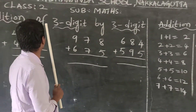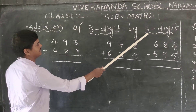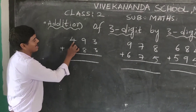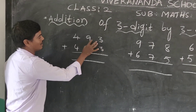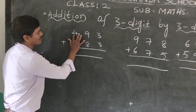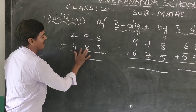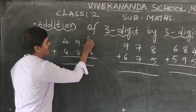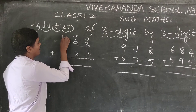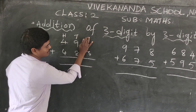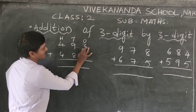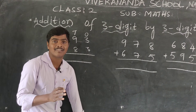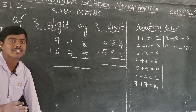Today's topic: addition of 3-digit by 3-digit. Look here — we have ones, tens, and hundreds positions. First, we do the ones place. 3+3=6. Keep 3 in mind, count on: 4, 5, 6. So 3+3=6. Write 6 in the ones place.